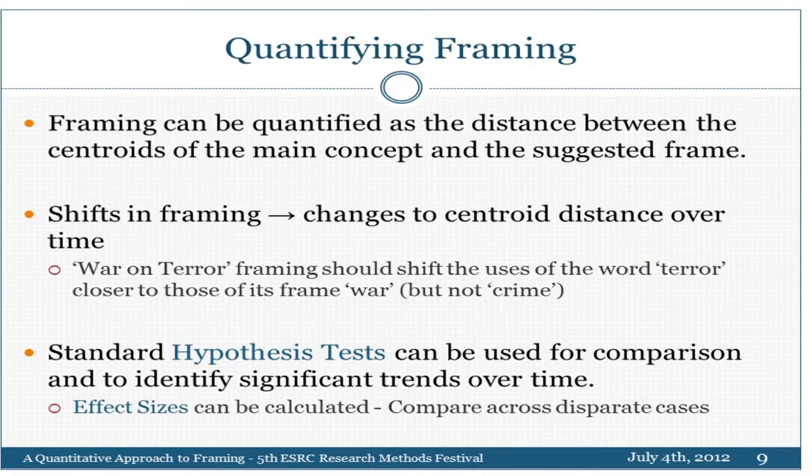Once we have this, we can quantify framing by distances in this space. The idea is that framing is measured by how far a concept is from its possible frame: the closer they are, the more likely it is that the concept is framed using that term. So we can look at shifts in framing — do those distances change over time, in this case as a result of 2001? You then have sets of vectors and scalar distances, so you can do many different types of hypothesis testing.